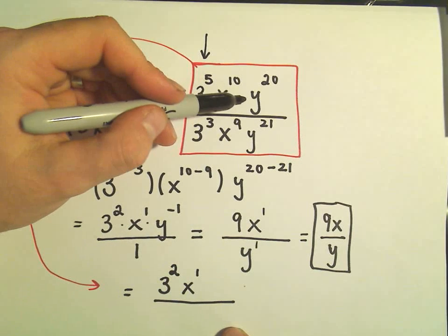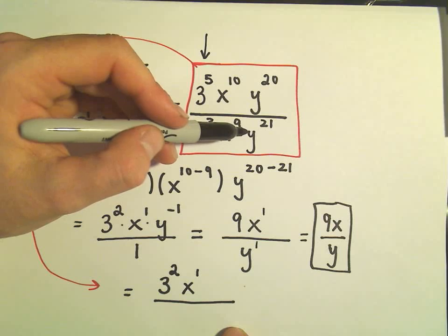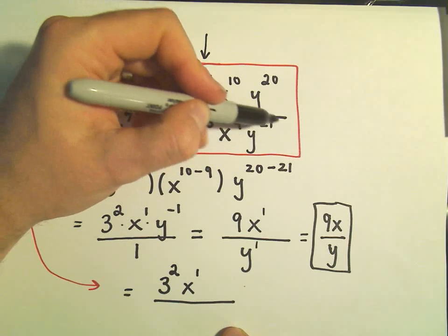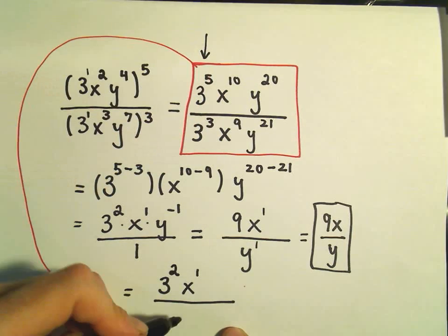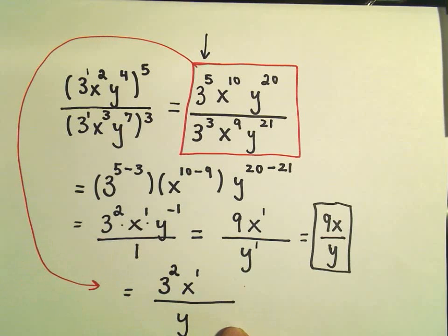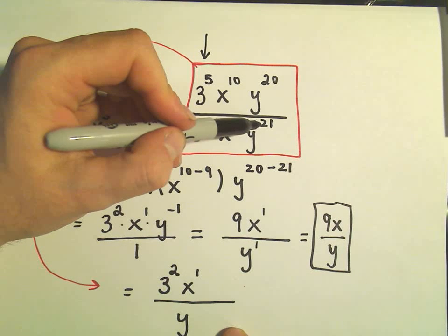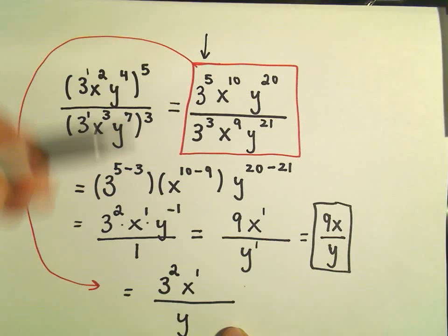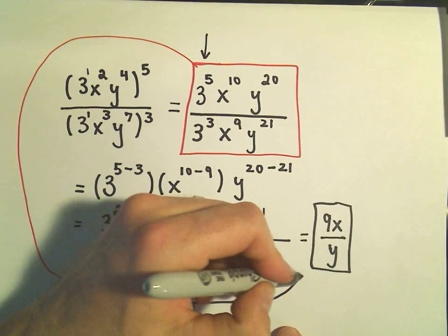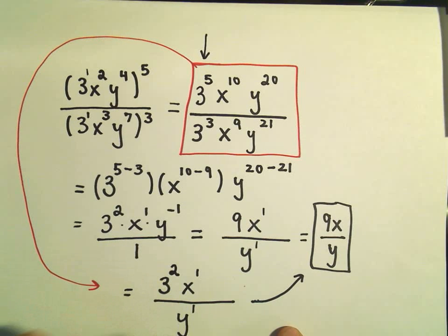Then I look at my ys. I have y to the 20th and y to the 21st. Well, 21 is a bigger exponent than 20. So the ys are going to live on the bottom of the fraction. And I take the bigger number, 21 minus 20. And that gives me to the first power. And then we can simplify. 3 squared will be 9x over y.